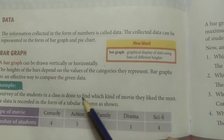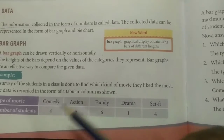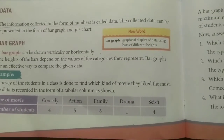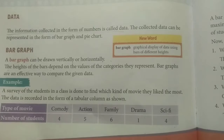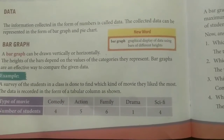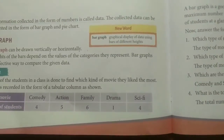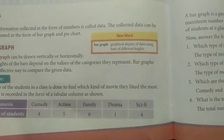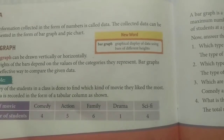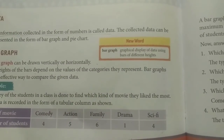First example: a survey of a class is done to find which kind of movie students liked the most. The data is recorded as a table — type of movie: Comedy, Action, Family, Drama, Science and Fiction; number of students: 4, 5, 6, 1, and 4. We're going to compare this with a bar graph and answer some questions.